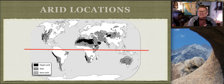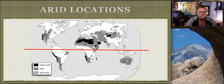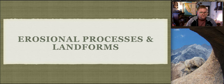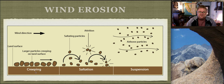Wind plays a dominant role especially when dealing with erosion, transportation, and deposition. There are three ways material can move: creeping, saltation, and suspension. This is very similar to how material moves in water.